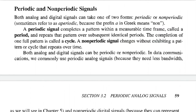Periodic and non-periodic signals. Both analog and digital signals can take one of two forms: periodic or non-periodic, sometimes referred to as aperiodic, as the prefix 'a' in Greek means non. A periodic signal completes a pattern within a measurable time frame called a period and repeats that pattern over subsequent identical periods. The completion of one full pattern is called a cycle. A non-periodic signal changes without exhibiting a pattern or cycle that repeats over time.